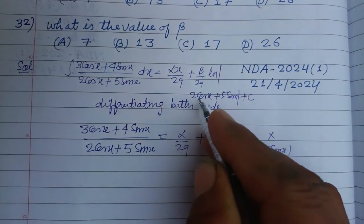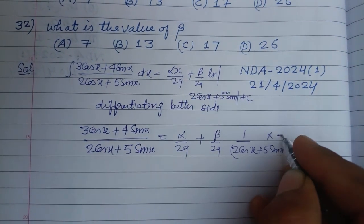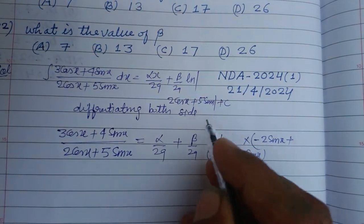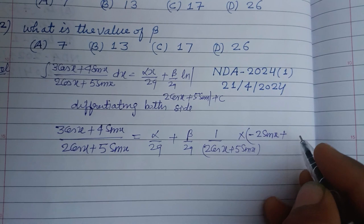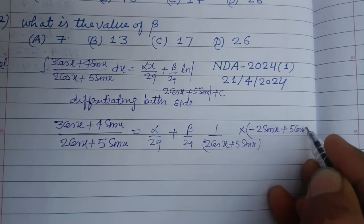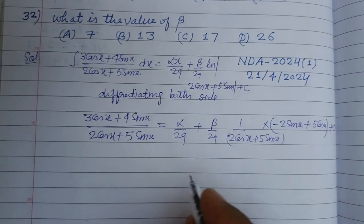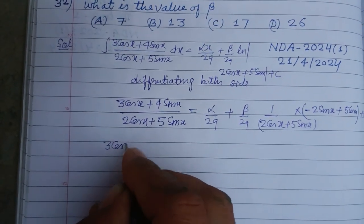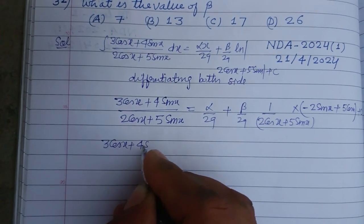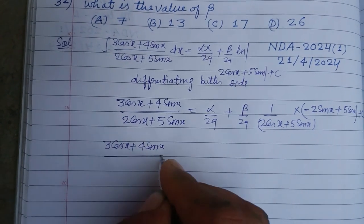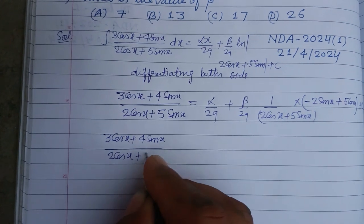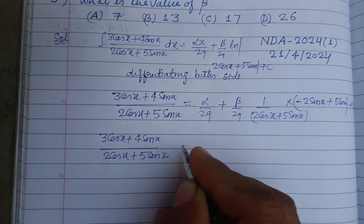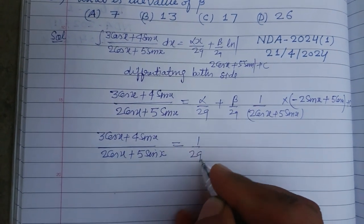Continuing the differentiation: multiplied by the derivative of (2 cos x + 5 sin x), which is minus 2 sin x plus 5 cos x. The differentiation of c is 0. Now simplifying, we have (3 cos x + 4 sin x) / (2 cos x + 5 sin x) equal to 1/29 as a common factor.